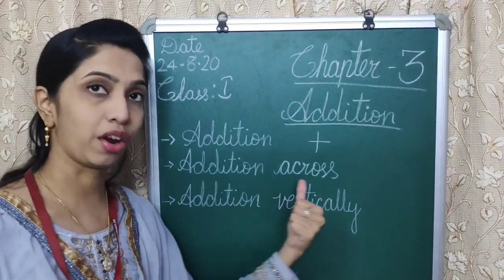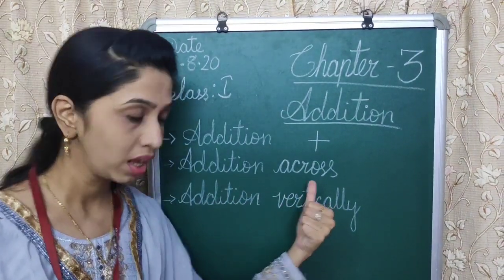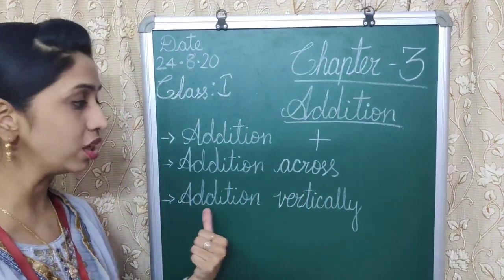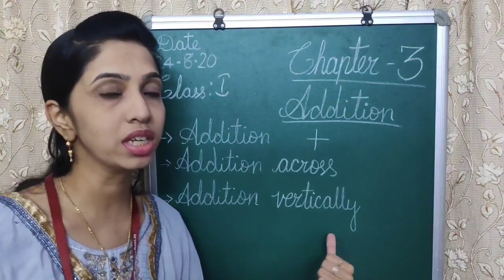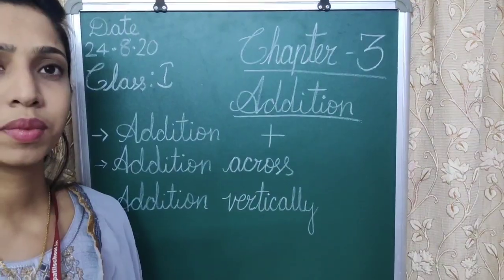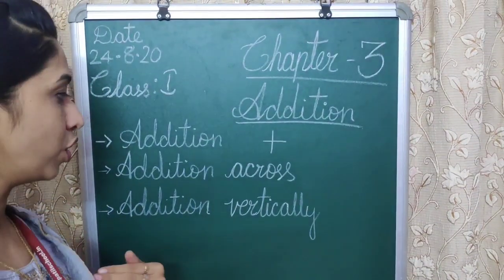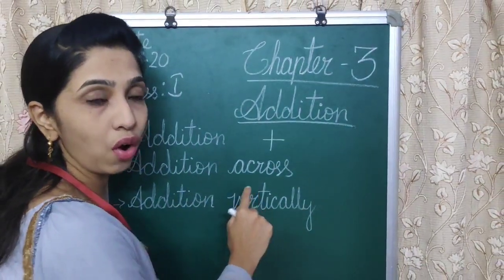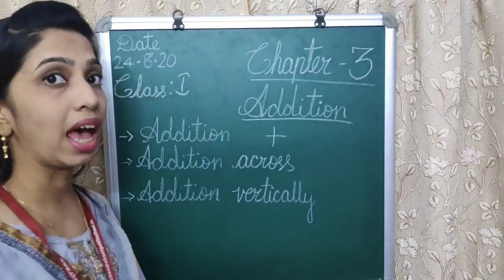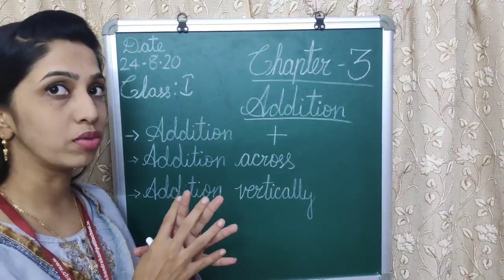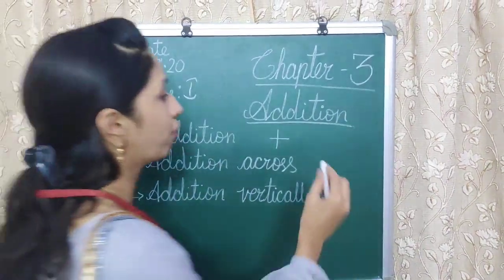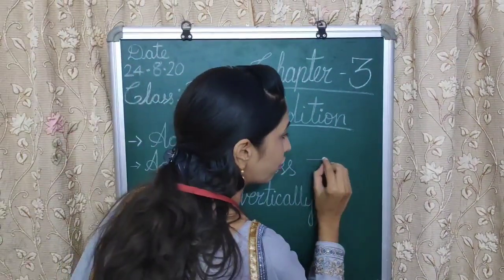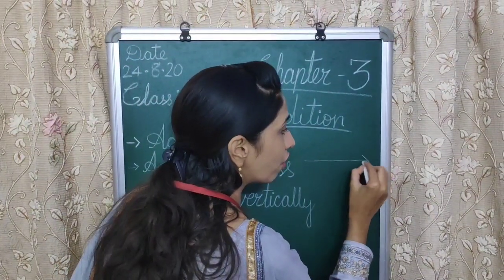Addition across and addition vertically. Addition across means adding objects from left to right.